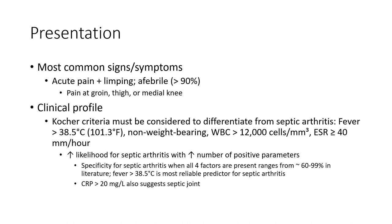There is a higher likelihood for septic arthritis with an increased number of positive parameters. Specificity for septic arthritis with four positive criteria ranges from 60% to 99% in the literature. Fever more than 38.5°C is considered a strong reliable predictor for septic arthritis. CRP of 1 to 20 also suggests septic arthritis.